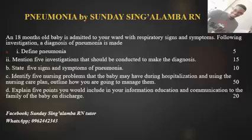Question A2 asks us to mention five investigations that should be conducted to make the diagnosis. First, we could start with history taking, which tells us about predisposing factors such as previous upper respiratory infections. Second, physical examination, which will reveal signs and symptoms of the condition. Third, sputum for microscopic culture and sensitivity, which will reveal the causative organism. Fourth, blood for full blood count.